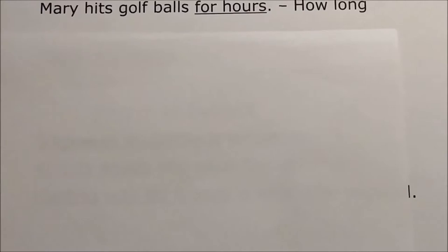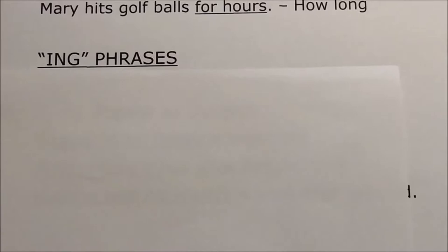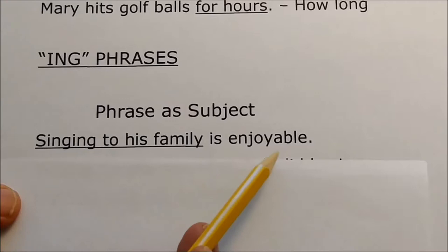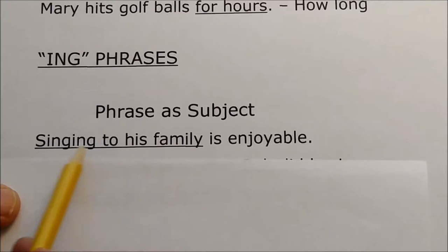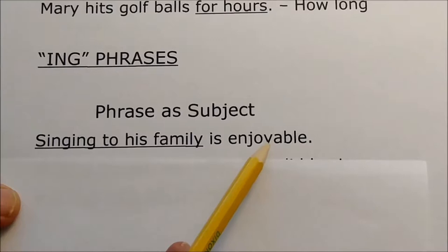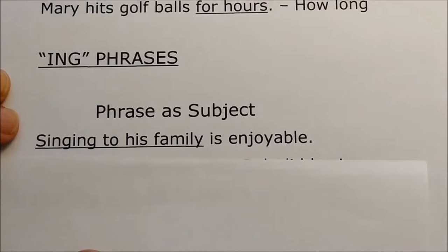Sometimes verbs can have an I-N-G on the end, like playing or reading. When verbs have an I-N-G on the end, sometimes they can be used as subjects or direct objects — in other words, they can be used as nouns. Let's take a look at I-N-G phrases. Here the phrase is a subject. Singing to his family is enjoyable. Singing to his family is a phrase and it acts as the subject of the sentence. Enjoyable is an adjective describing this subject. A verb with the I-N-G on the end can be a subject.